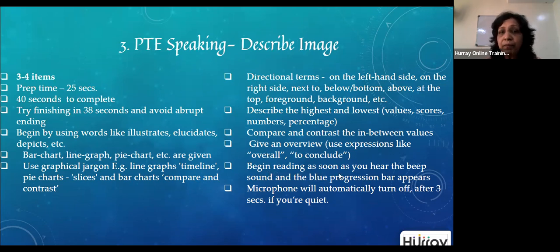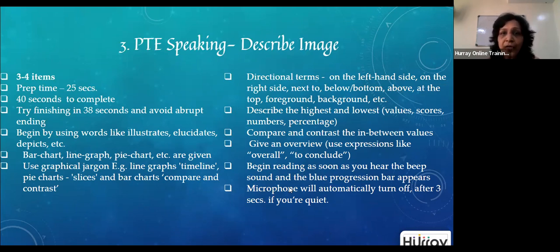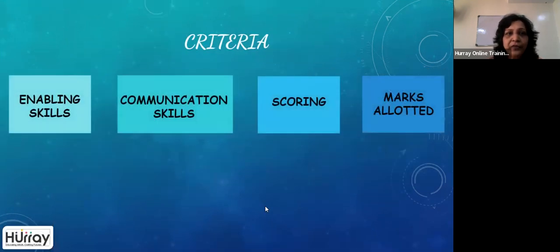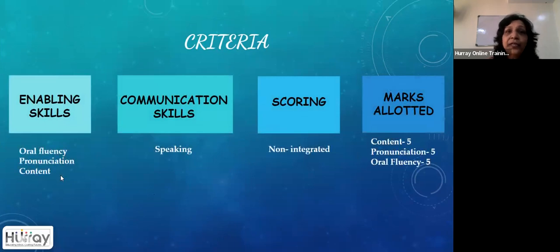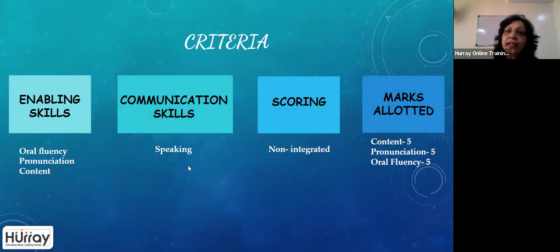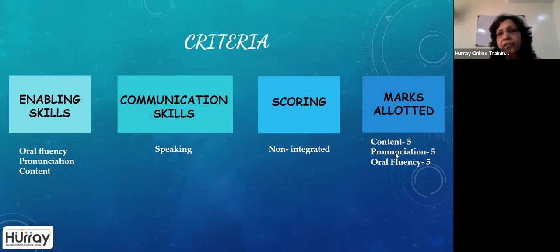Begin speaking as soon as you hear the beep — that's when your recording starts. Your microphone will stop if you are quiet for more than three seconds. The criteria for Describe Image are oral fluency, pronunciation, and content. Only speaking is required here — it is a non-integrated question. The scoring is five marks each for content, pronunciation, and oral fluency.